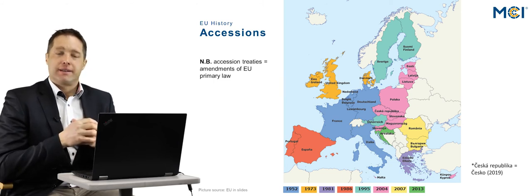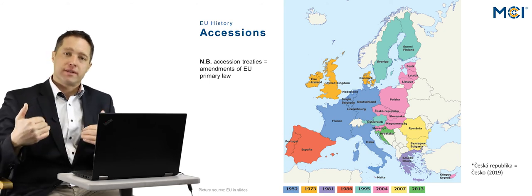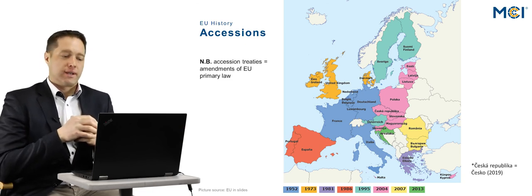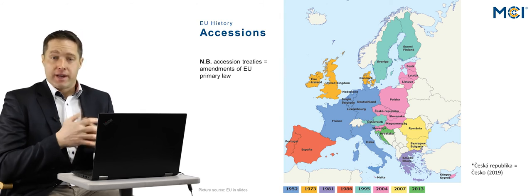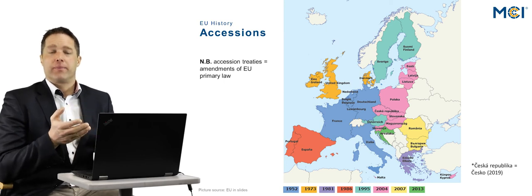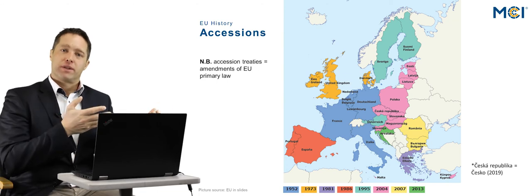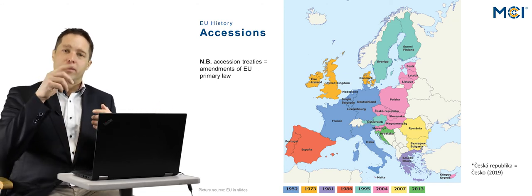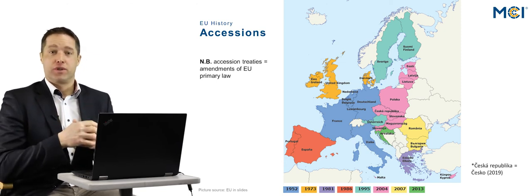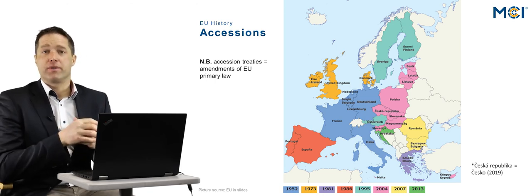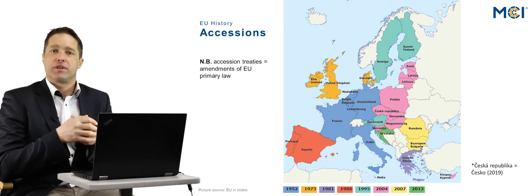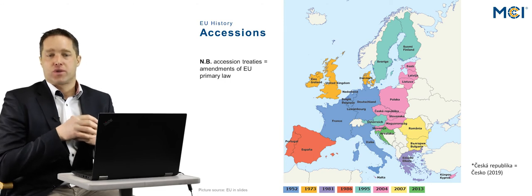In 1981, Greece joined — what we call the Southern enlargement — and also in the south of Europe, Spain and Portugal joined in 1986. In 1995, Austria, Sweden, and Finland joined the European Union. The same logic I mentioned regarding Northern Ireland would also apply to the Nordic countries: Norway initially should have joined the EU as well, but there was a referendum in Norway and the people spoke out against joining. That is why Norway did not join the EU in 1995.